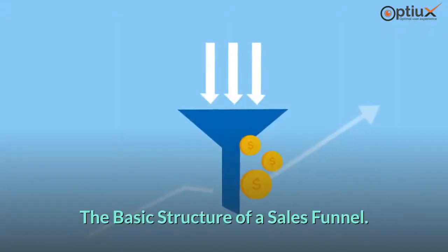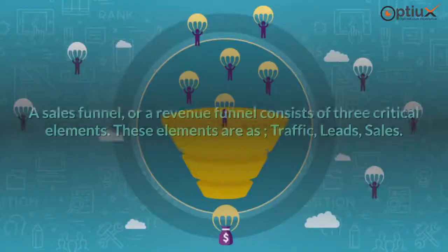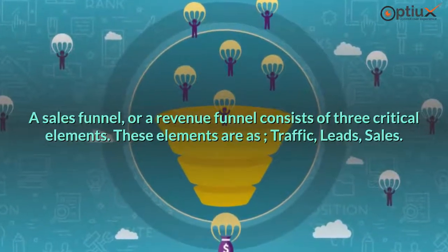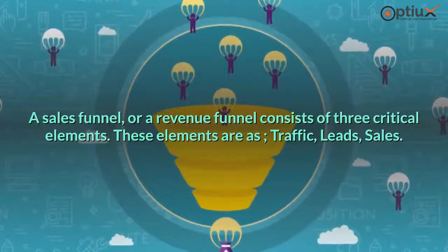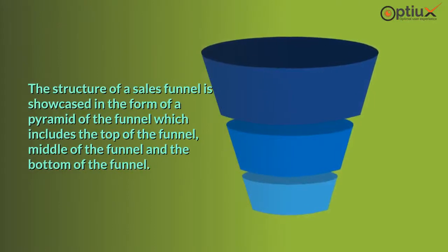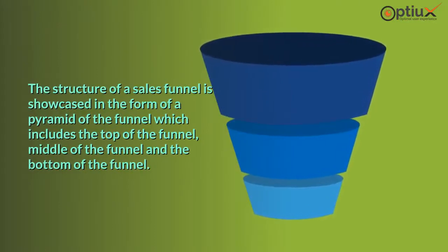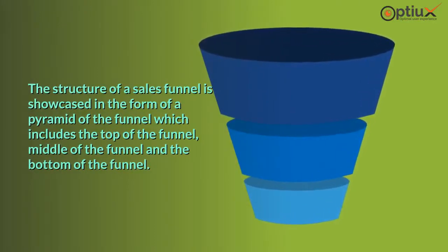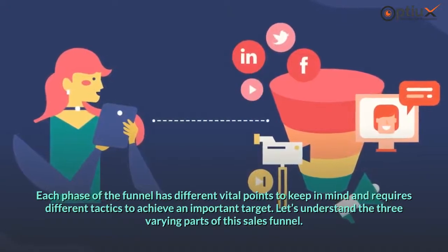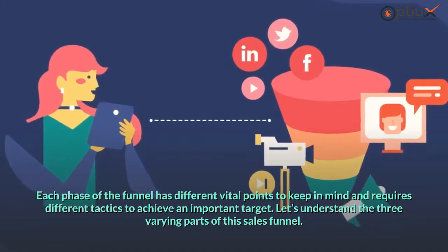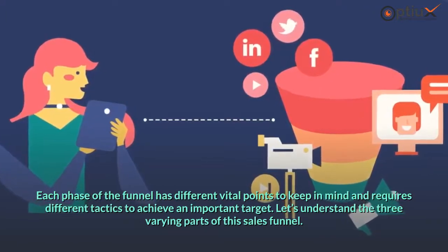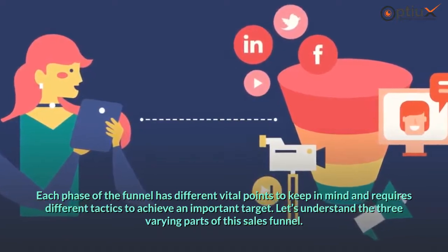The basic structure of a sales funnel. A sales funnel or revenue funnel consists of three critical elements: traffic, leads, and sales. The structure of a sales funnel is showcased in the form of a pyramid or funnel which includes the top of the funnel, middle of the funnel, and the bottom of the funnel. Each phase has different vital points to keep in mind and requires different tactics to achieve important targets.